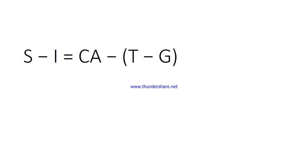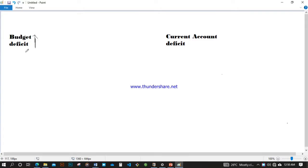When we look at these two, you realize that when you compute it, you get the twin deficit to be equal to savings minus investment, which is equal to the current account minus government taxes minus government expenditure. In our subsequent stages, we are going to prove this particular formula.